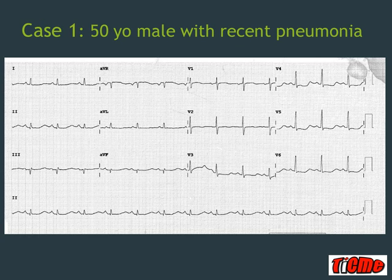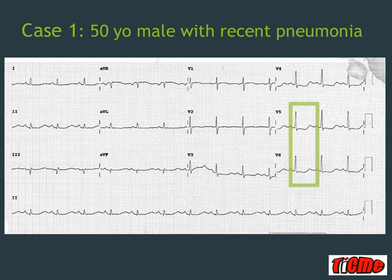First case: a 50-year-old male who has had a recent pneumonia. If we look at his ECG, he appears to be in sinus rhythm — P waves before every QRS complex. Although his R waves are reasonably prominent in V1 to V3, there's nothing else too scary about the ECG. However, the QT segments are looking very long.